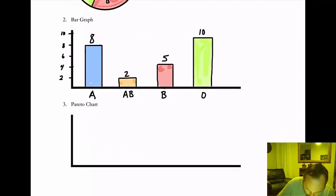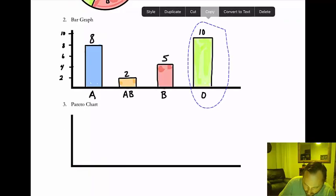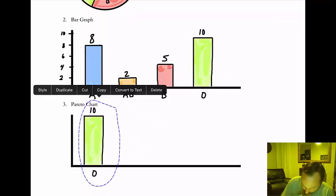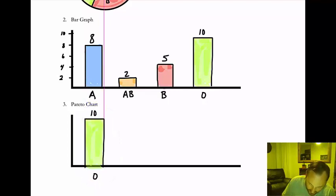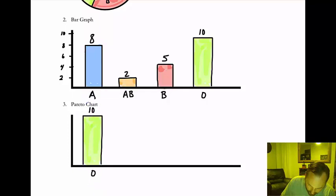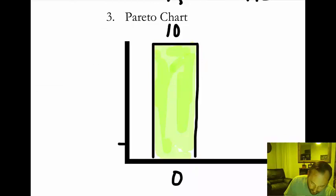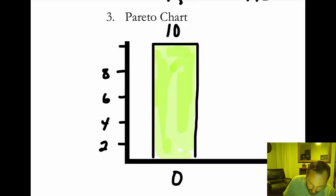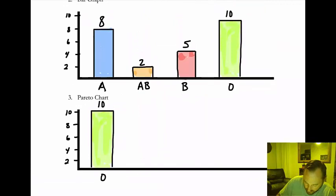And very simply for the Pareto chart coming up below, we're just going to put that in descending order. I just need to make my adjustment for the Y-axis: 2, 4, 6, 8, 10 — more evenly spaced. Counting by evens, we've got that.